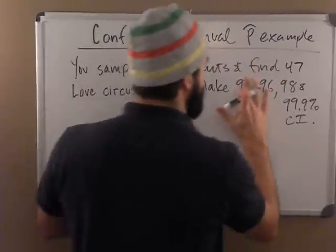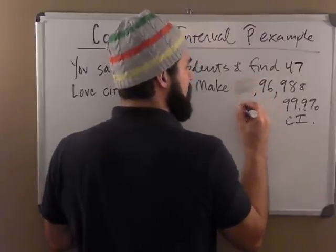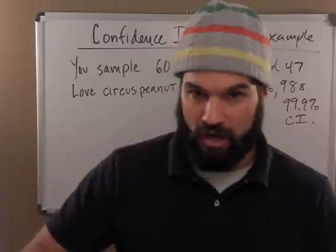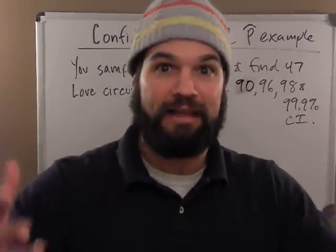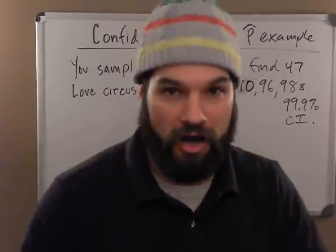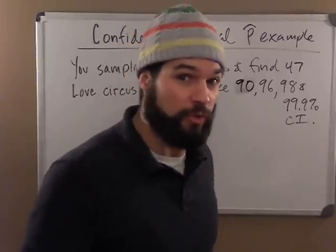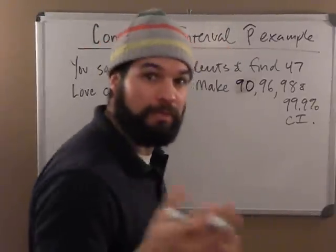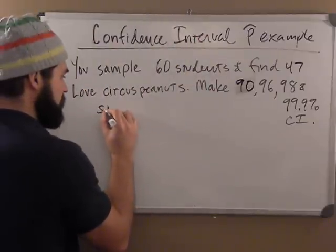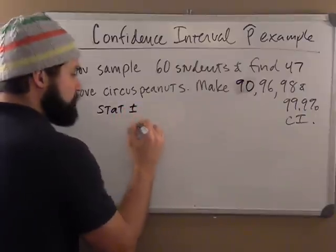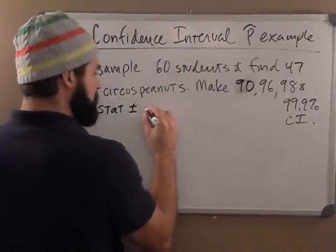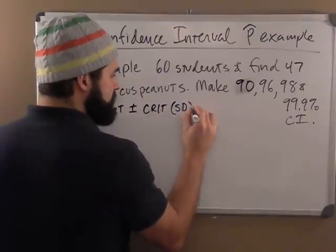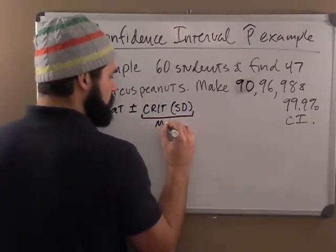So I'll do a 90 - we already did 95 - so let's do a 90, a 96, a 98, and a 99.9. To find the confidence interval, your formula sheet tells you exactly what to do. You take your statistic - whatever it is, your p-hat or your x-bar - and you add and subtract some margin of error, which is basically a critical z or a critical t times your standard deviation.